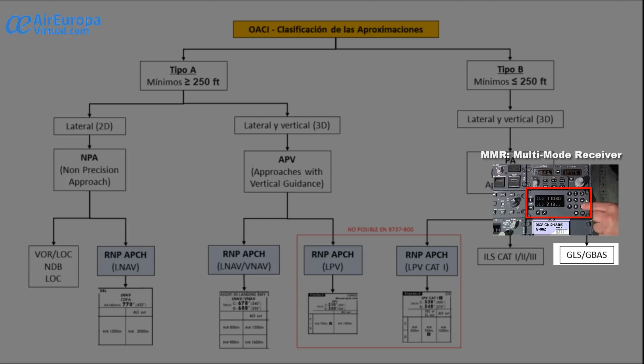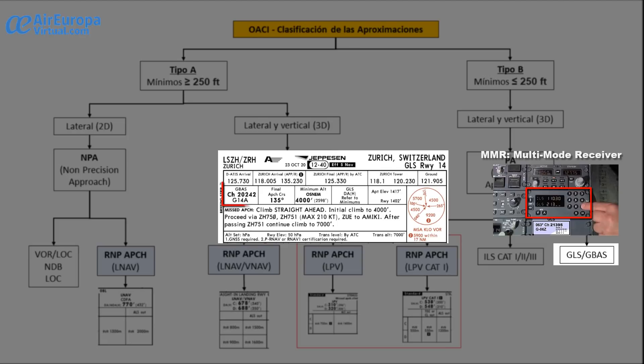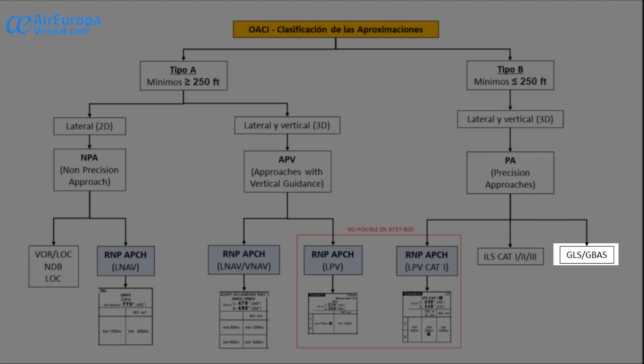In this case it is no longer the EGNOS channel but the GBAS channel. It is basically a combination of an augmented GNSS signal and a ground antenna that helps to update the position of the aircraft with high precision. In simulation, this system is currently only available on the 737 or PMDG ZIBO, while if you fly PMDG, you cannot enjoy it for the moment.